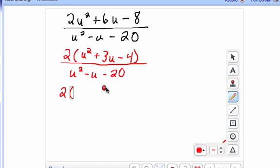So what two numbers multiply to give you a negative 4, but add to give you a positive 3? That's what we need to look for here.